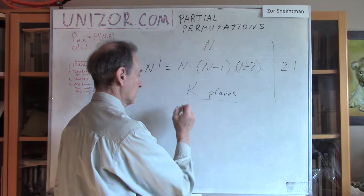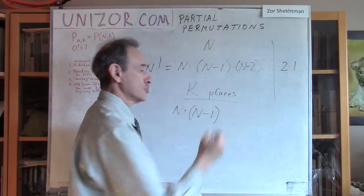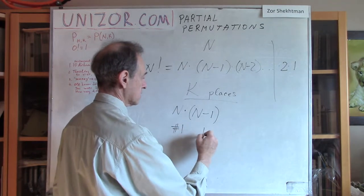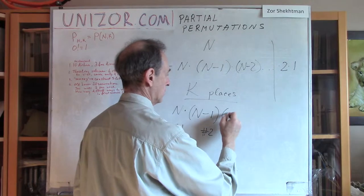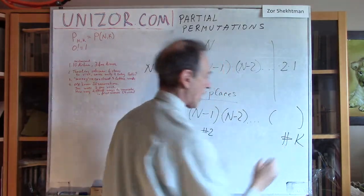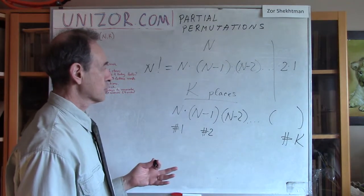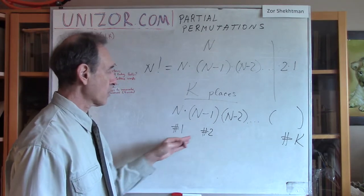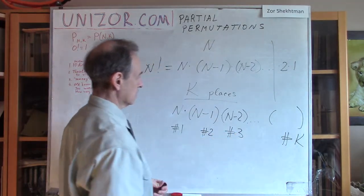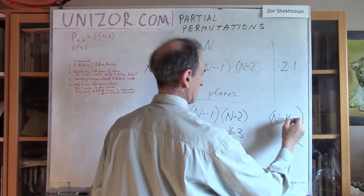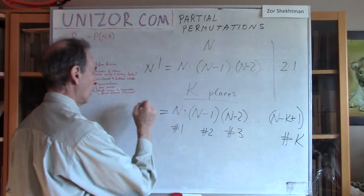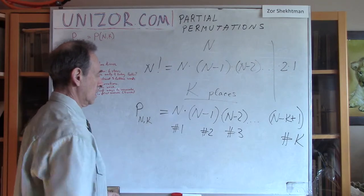With each of these, we have n minus one choices for the next object, object number two. Then n minus two, and so on. Now, what is the last member? It's supposed to have the number k, because we have only k places to put our objects. So the numerical sequence would be: this is number one, this is number two, and the last one would be number k — which, as very easily seen, is n minus k plus one. This is the formula, basically. It's called the number of permutations from n objects taken k at a time.